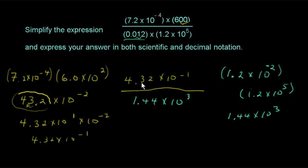The final step is to do the division. I'm going to divide this part, and then this part separately. So 4 and 32 hundredths divided by 1 and 44 hundredths, I believe it goes in there a nice round three times.